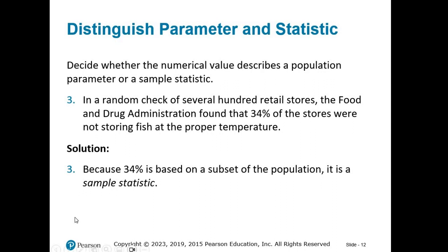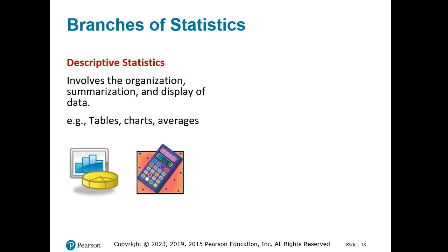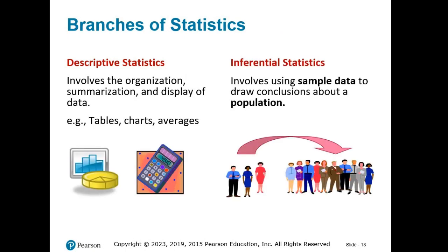We talked earlier about the process of statistics being cyclical, like a wheel with different spokes. There are two parts of statistics that align with the various steps in that process. Statistics can be broken down into two branches: descriptive and inferential statistics. Descriptive statistics aligns with the beginning processes — the organization, summarization, and display of the data. Inferential statistics aligns with the stages using sample data to draw conclusions about the population.